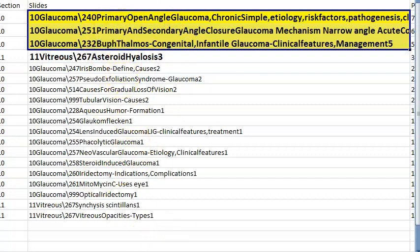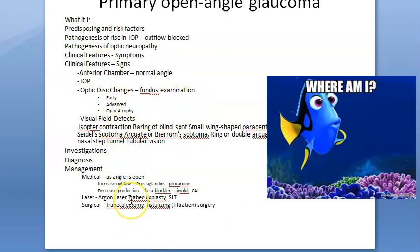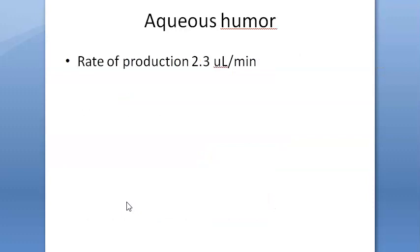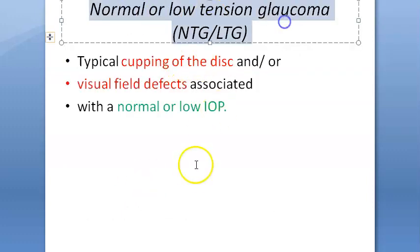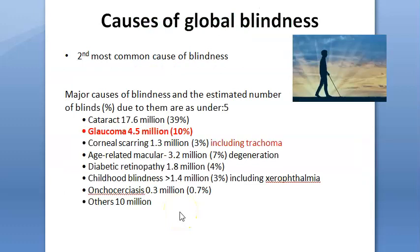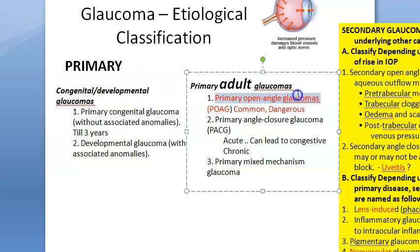Important glaucoma topics: primary open-angle glaucoma (POAG), also called chronic simple glaucoma of adult onset. Glaucoma is defined as optic neuropathy with irreversible visual field defects, associated with raised intraocular pressure. Aqueous humor production: 2.3 microliters per minute. Glaucoma is the second leading cause of global blindness. Classification: primary and secondary; primary includes open-angle and angle-closure; congenital glaucoma is separate.